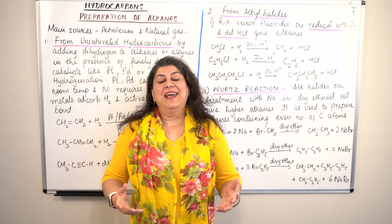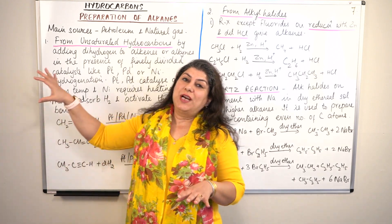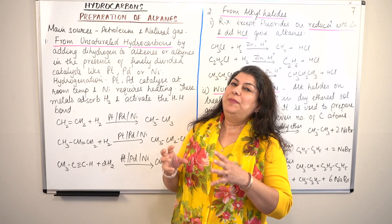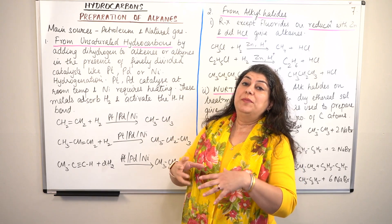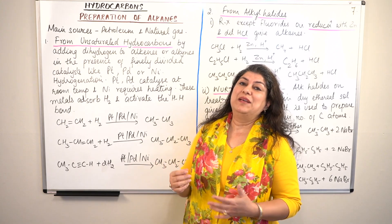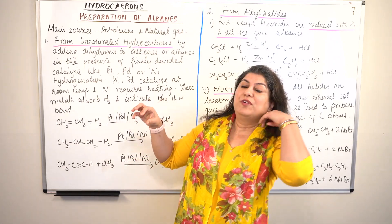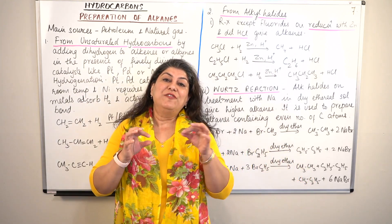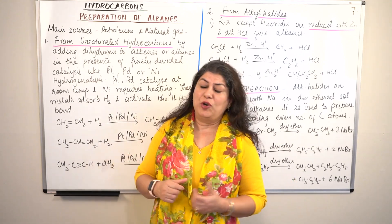Hello, I am Seema and welcome to part 7 of the chapter hydrocarbons. In this video I'm going to start talking about the methods of preparation of alkanes. Alkanes can basically be extracted from petroleum and natural gas. Petroleum is a mixture of thousands of alkanes and natural gas is basically a mixture of methane, ethane and propane. These are the main sources. Other than this, if you have to prepare alkanes there are three different sources from which you can prepare them by modifying those molecules.